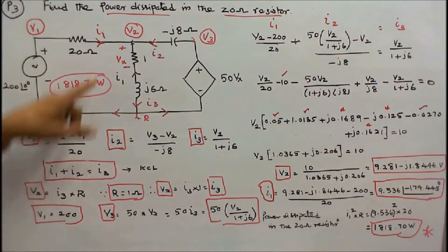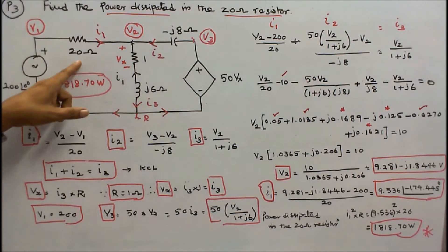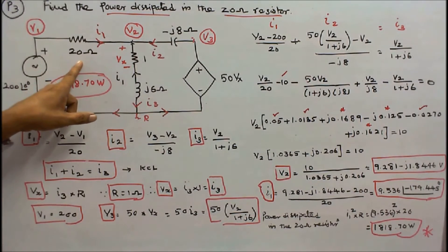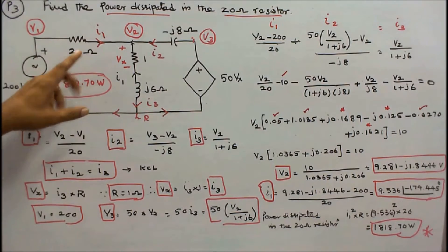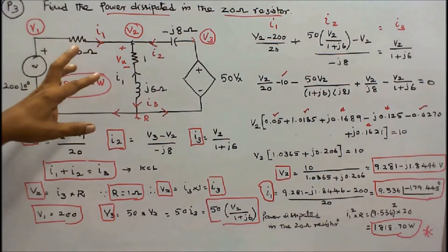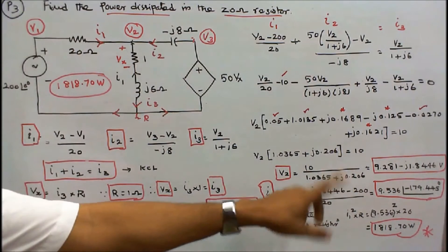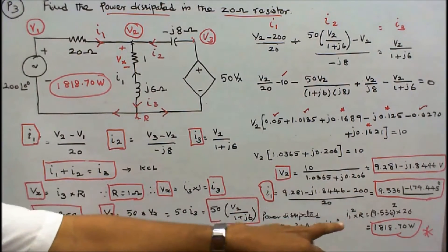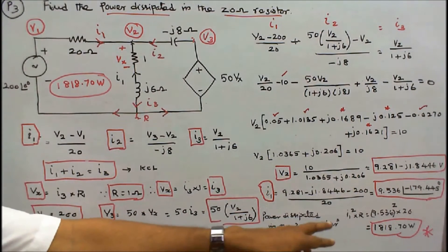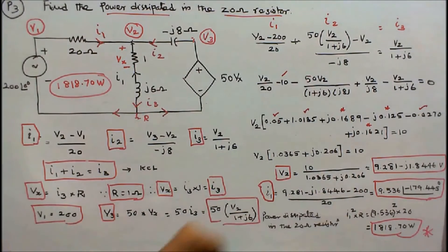Once I know I1, I can find the power dissipated in the 20 ohm resistor: I1 squared times R equals 9.536 squared times 20, which equals 1818.70 watts.